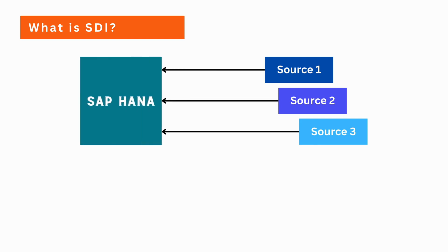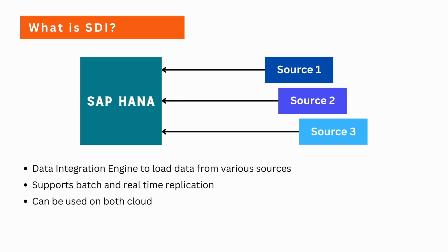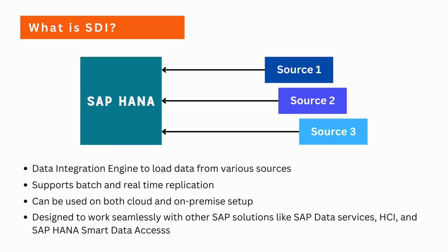As you can see in the picture, we can integrate SAP HANA with various data sources like databases, cloud storage, and web services. Smart Data Integration also supports batch and real-time replication. This can be used on both cloud and on-premise setups. SDI is designed to work seamlessly with other SAP solutions like SAP Data Services, HCI, and SAP Smart Data Access.